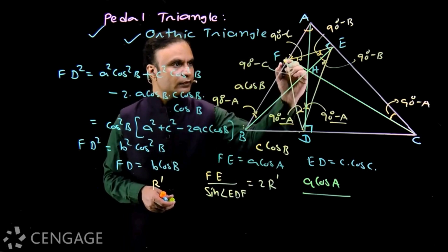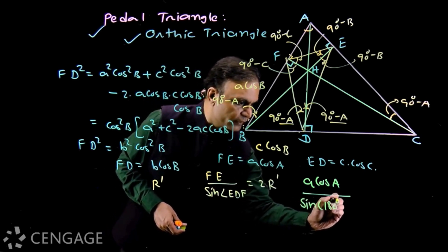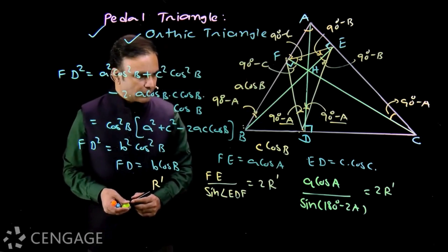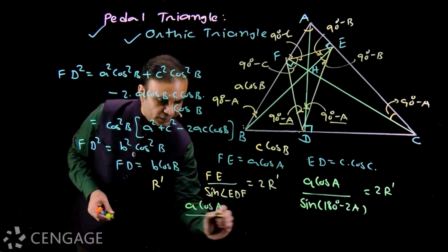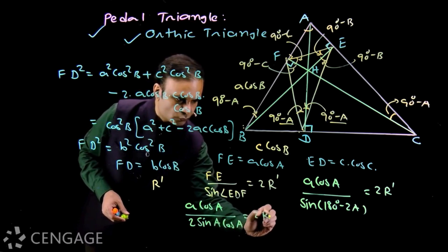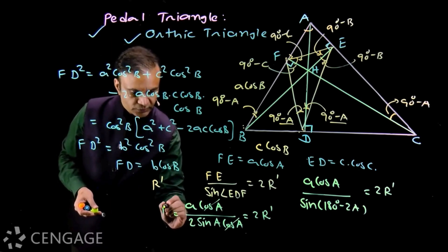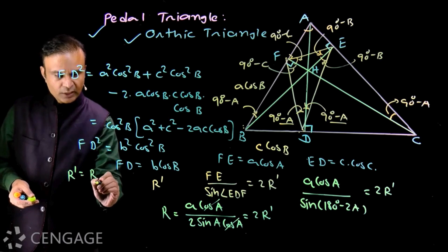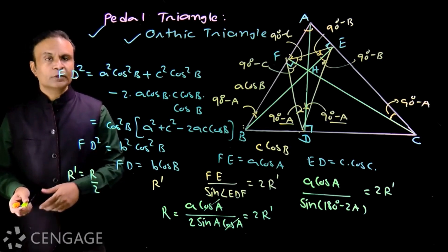So we have (A cos A) / sin(180° − 2A) = 2R'. Since sin(180° − 2A) = sin 2A = 2 sin A cos A, this becomes (A cos A) / (2 sin A cos A) = 2R'. The cos A cancels, giving A / sin A = 2R', and by the sine rule A / sin A = 2R. Therefore 2R' = R, so R' = R/2. The circumradius of the pedal triangle is half the circumradius of the parent triangle ABC.